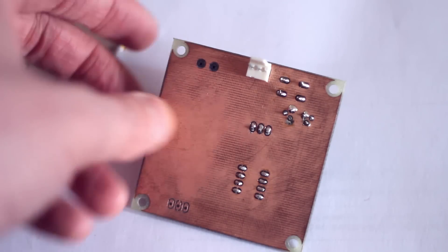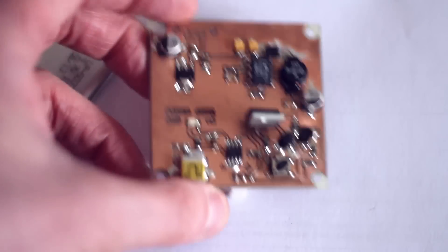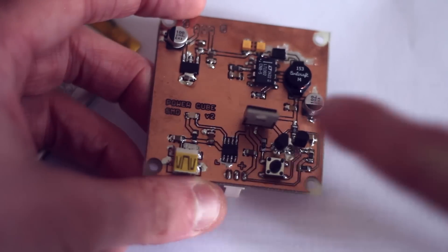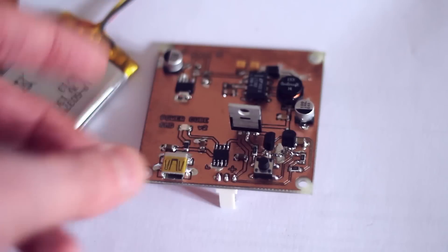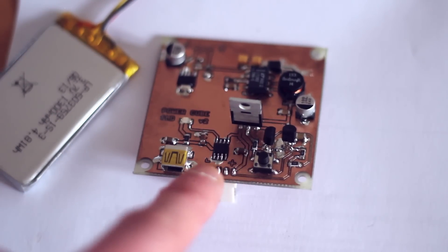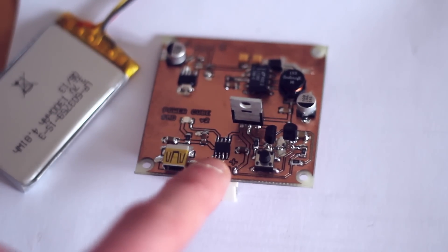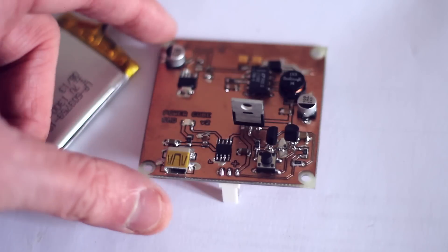So on the board here, we have a micro USB. Is that mini USB? It might be mini. Yeah, I think it's mini USB. We have the MAX1811, which is a lithium-ion battery charger. It runs off USB voltage.